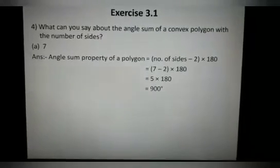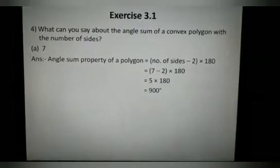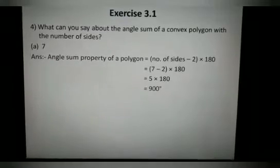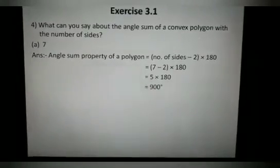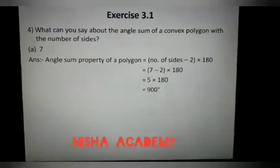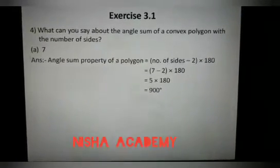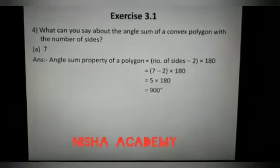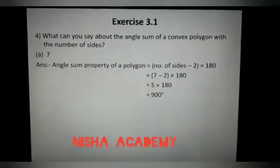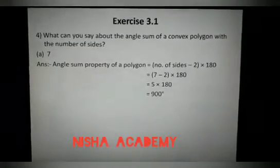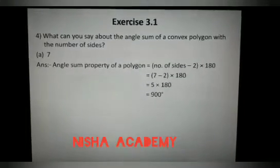Continuing further with our fourth question: What can you say about the angle sum of a convex polygon with the number of sides? As we have followed the formula in third question, the same formula you have to use here. You'll be given number of sides and you have to find their angle sum property.